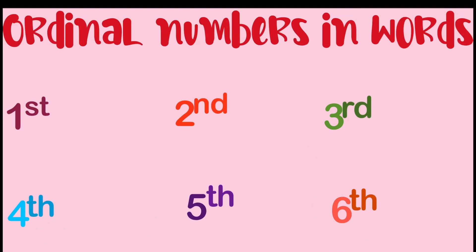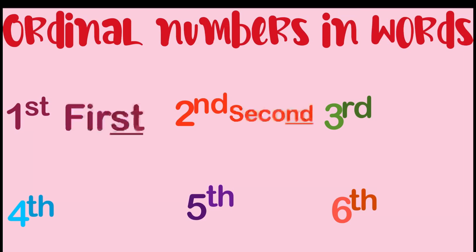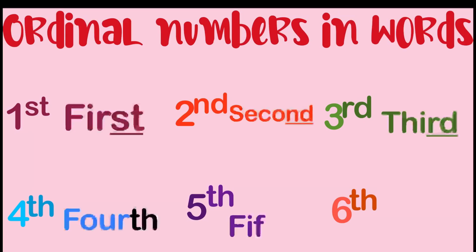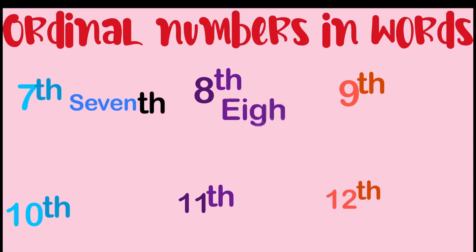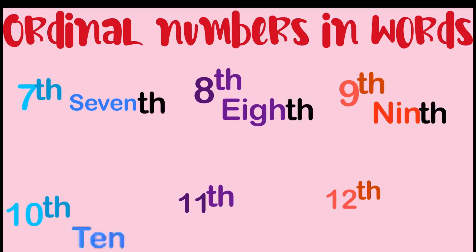Now let's proceed to ordinal numbers in words. First — FIRST. Second — SECOND. Third — THIRD. Fourth — FOURTH. Fifth — FIFTH. Sixth — SIXTH. Seventh — SEVENTH. Eighth — EIGHTH. Ninth — NINTH. Remember, at ninth, there's no E. Tenth — TENTH.